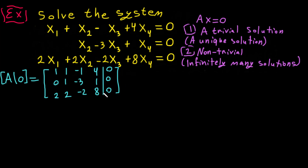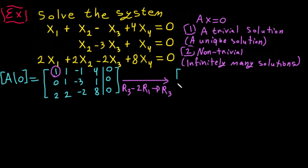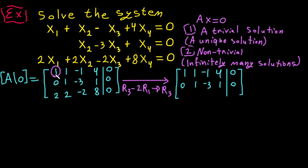Now we have the matrix set up. As before, we need to put a leading one in place — we already have a 1 here. We need the rest of the column to equal zero, so we change certain entries to zero. We subtract: R3 becomes R3 minus 2R1. This gives: row 1: 1, 1, -1, 4; row 2: 0, 1, -3, 1; row 3: 0, 0, 2, -2.